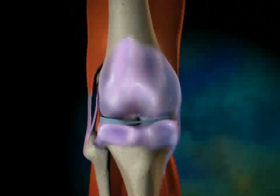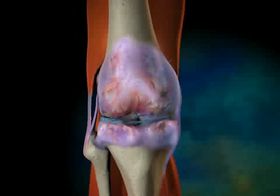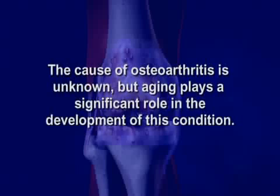In people with osteoarthritis, there is a chronic degenerative loss of cartilage, resulting in bone-to-bone exposure, bone destruction, inflammation, and pain. Osteoarthritis can affect any joint in the body and is commonly found in the neck, back, and hips. The cause of osteoarthritis is unknown, but aging plays a significant role in the development of this condition.